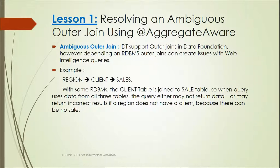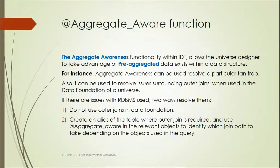Suppose we have three tables: Region, Client, and Sales. In the RDBMS, the Client table is joined to a Sales table. When a query uses data from all three tables, the query may not return data or may return incorrect results, because if a region does not have a client, there can be no sale. At some regions there may be no client, and as there is no client there will be no sale, so it may cause incorrect results.